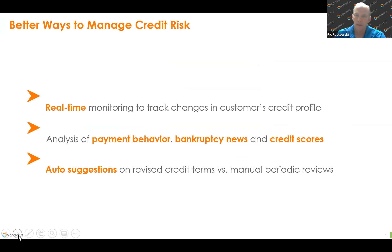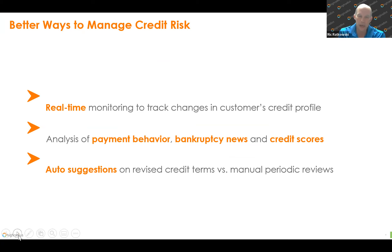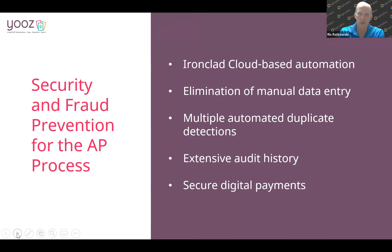The last piece we dig into is better ways to manage credit risk. Especially with the economy the way it is, when you have small teams it's not possible to review many customers annually for their credit situation — and that's fine when the economy is stable, but when it's not, it's a challenge. We provide real-time credit monitoring, analysis of payment behavior, monitoring of bankruptcy news and credit scores, and make auto suggestions. The AI engine makes auto suggestions on credit terms versus the manual periodic review of credit terms. That's where we really fit in to accounts receivable.